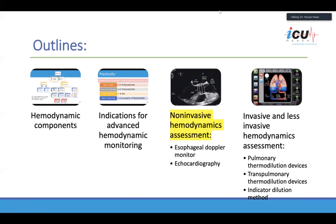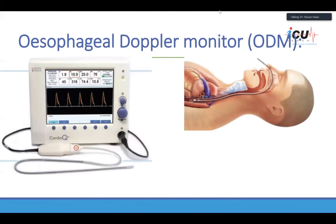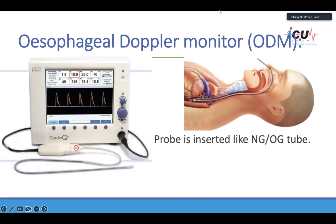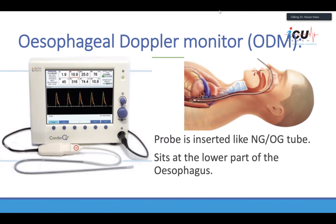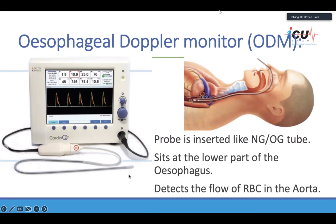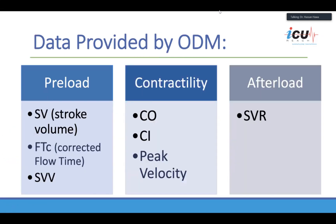Moving on to non-invasive hemodynamic assessment, I'll start with the esophageal Doppler monitor, or ODM. It's a British device — that's why they write 'esophageal' with an O. This device is really like an NG tube with a probe at the tip directed backwards. It sits on the lower part of the esophagus and detects the flow of red blood cells in the aorta. You can insert it either nasally or orally, and it's commonly used in Britain for post-operative patients.